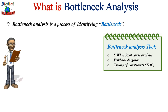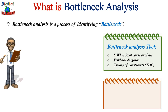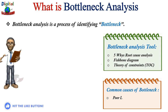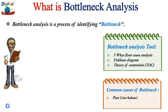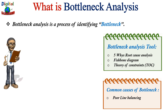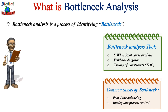What are the two main causes of production bottlenecks? One is poor line balancing — some jobs take longer than expected or run slower, resulting in a huge pile-up of material. The other is inadequate process controls — the equipment does not run as it was designed to run.